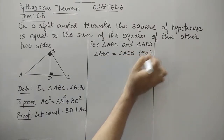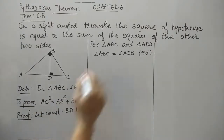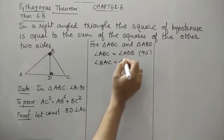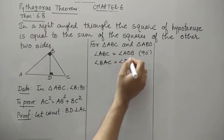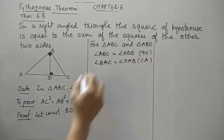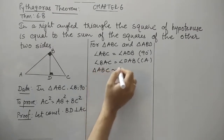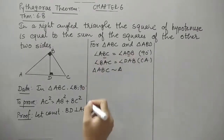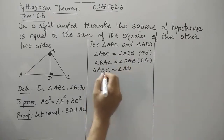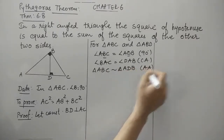One more angle we have to show. We can see angle BAC is the same as angle DAB — they are common angles. So as the angle-angle (AA) criteria exists, we can say that triangle ABC is similar to triangle ADB, where B corresponds with D, A with A, and C with B. Here we prove the similarity by using angle-angle criteria.